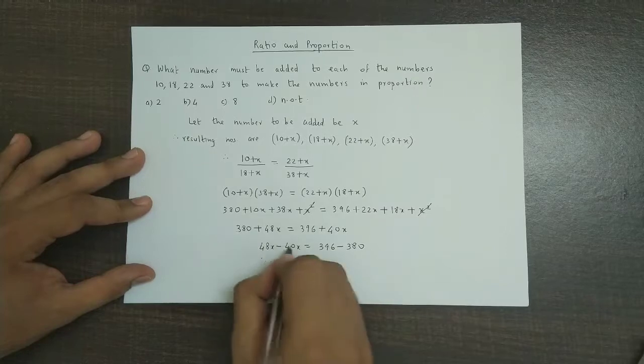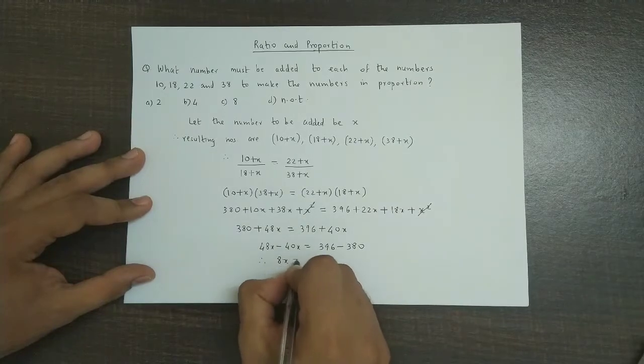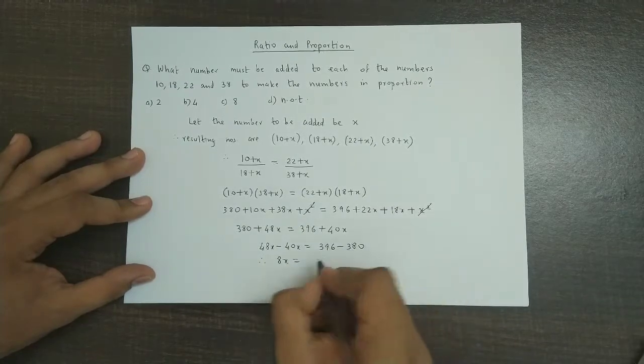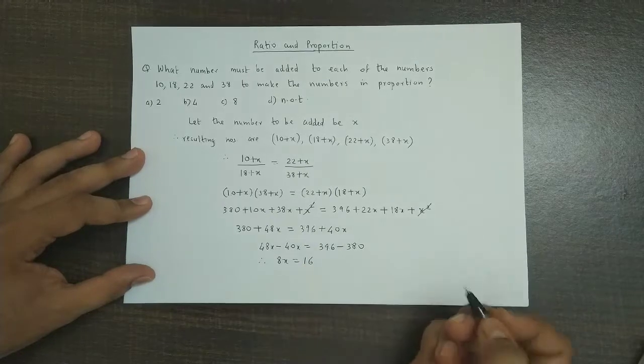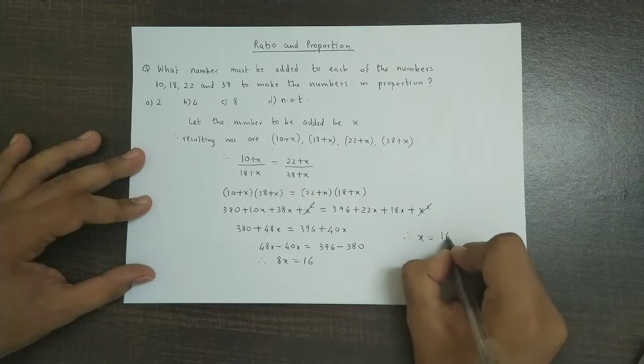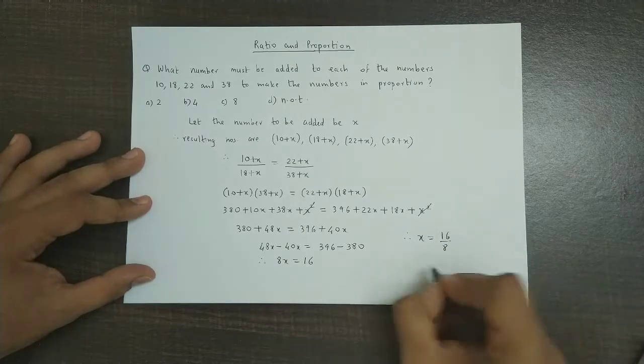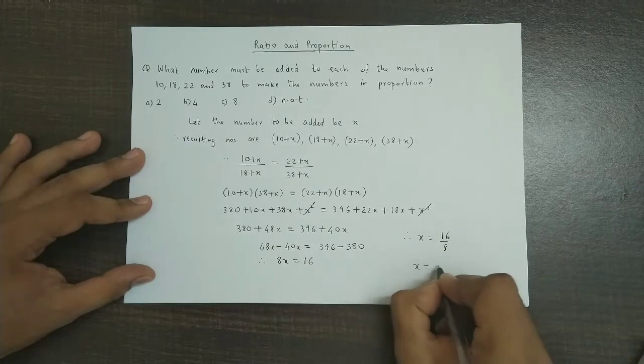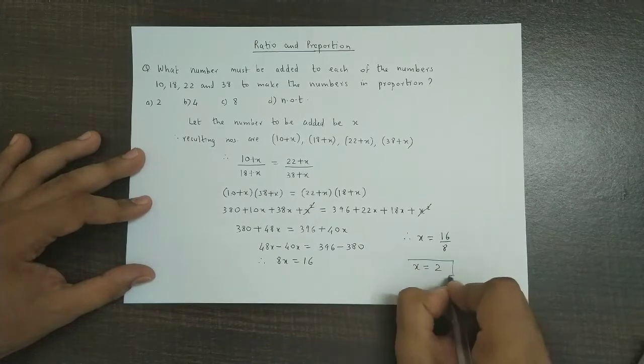So therefore now this difference is 8x. So 8x is equal to 16. Therefore we could say x is equal to 16 by 8. So our required answer is x is equal to 2.